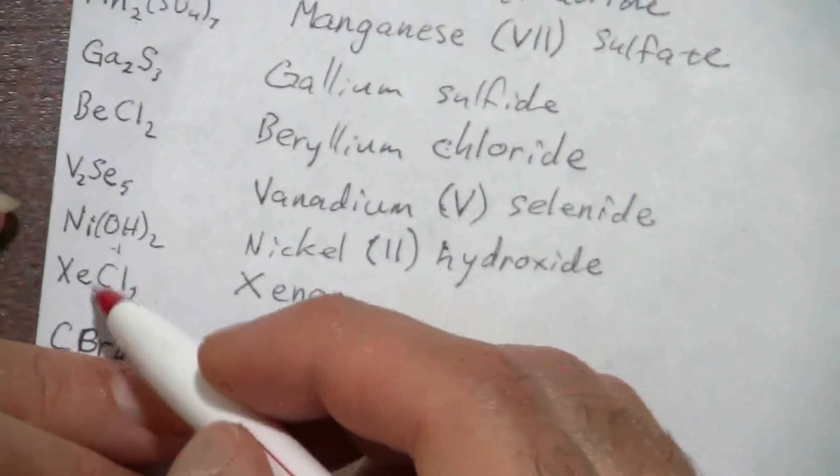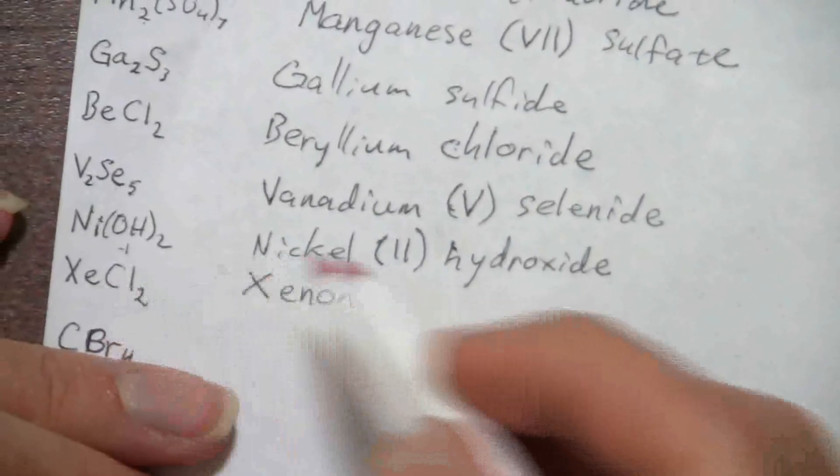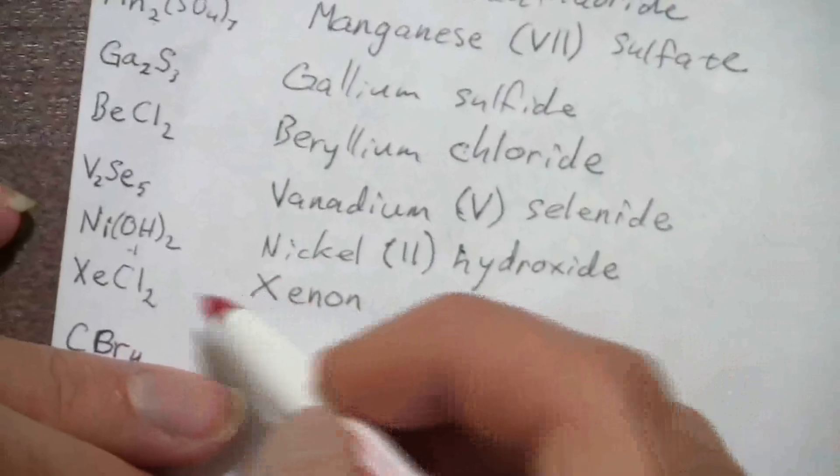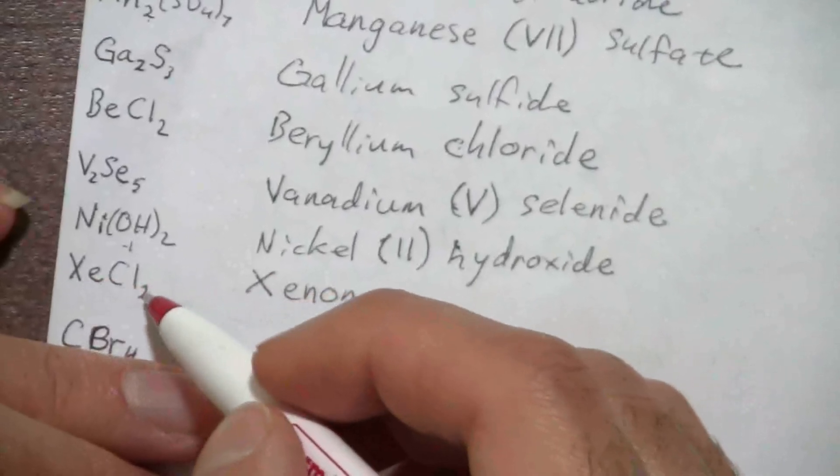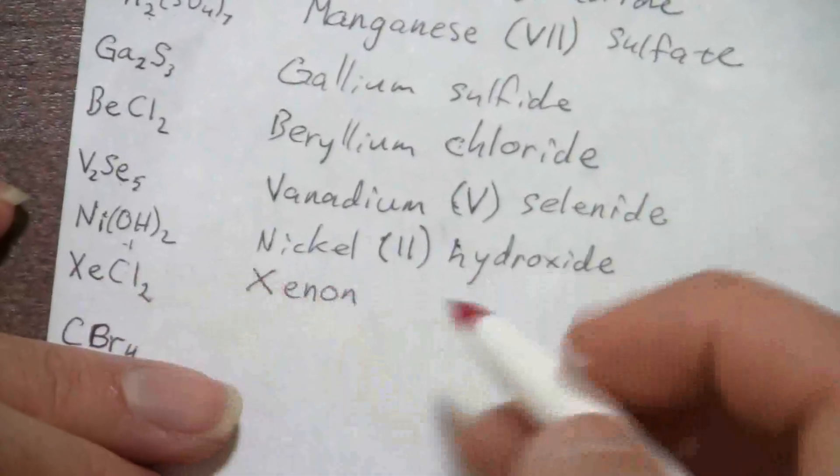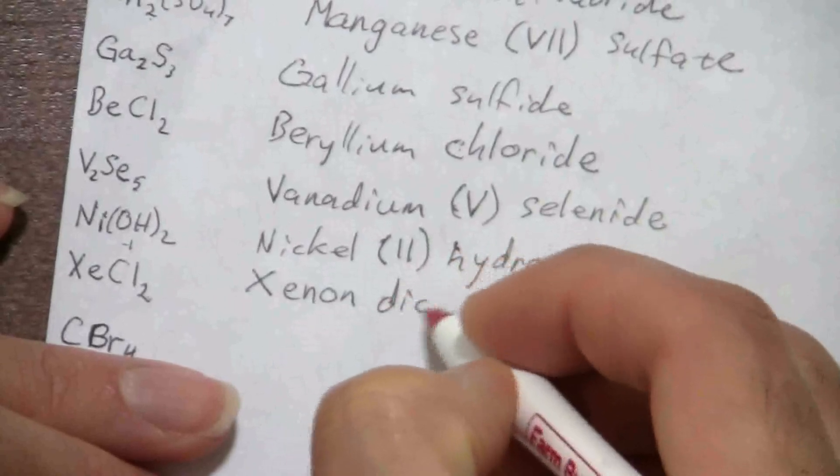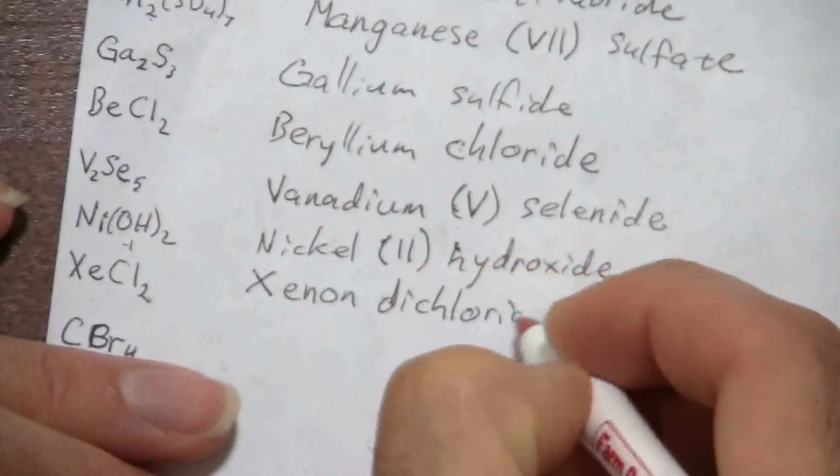So we have one there, so we're not going to put the mono since that's the first element, but we have dichloride. So xenon dichloride.